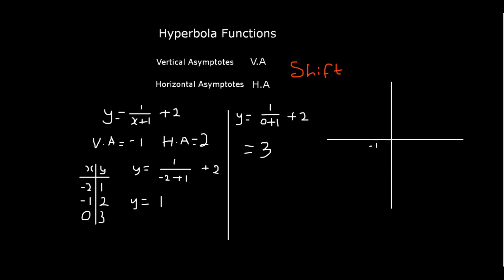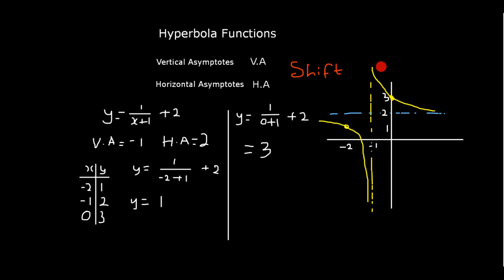Our VA is at -1 and our HA is at 2. Where x = -2, y = 1, so that point is here. Where x = 0, y = 3, so that point is here. The graph goes like this — it is a positive graph. You can see that it is a positive hyperbola shifted to the new cross defined by VA = -1 and HA = 2.